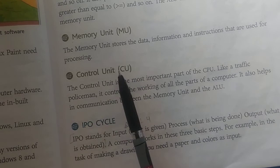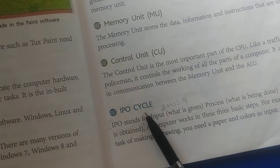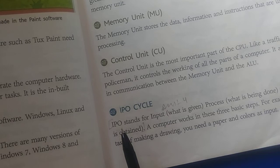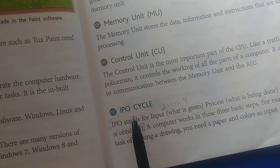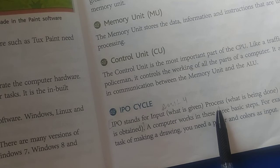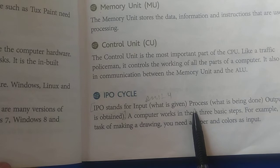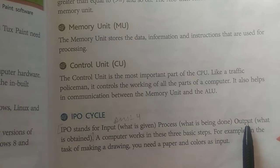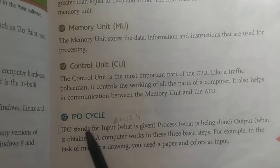Now the IPO cycle - computer is a machine, and it always needs instructions. We give input to the computer, then the computer will process it - meaning it performs all necessary calculations - and after that it provides the result as output. So it accepts data as input, processes it, and provides output. The computer works on the IPO cycle and keeps repeating this process, forming a cycle - that is what we call the IPO cycle. Okay, that's all for today. Next day we will read further. Have a good day.